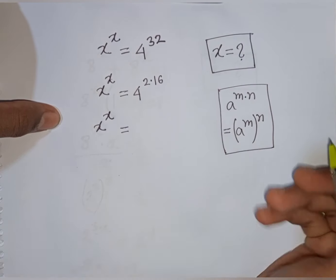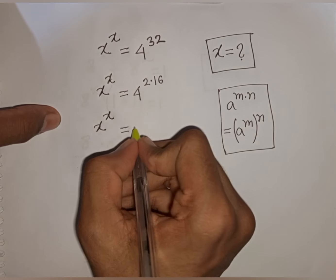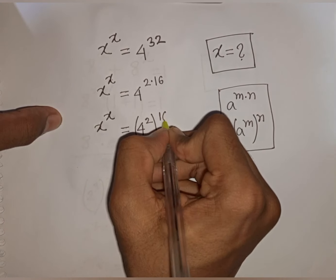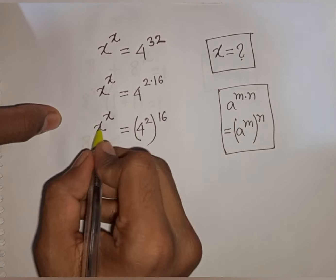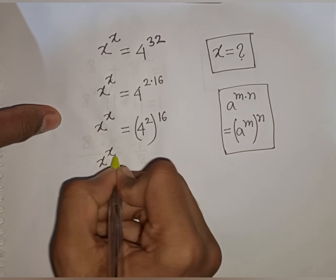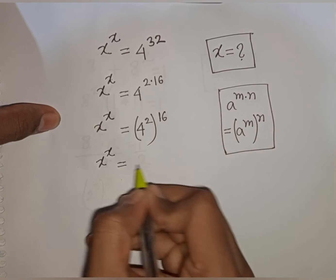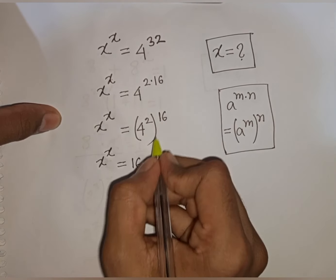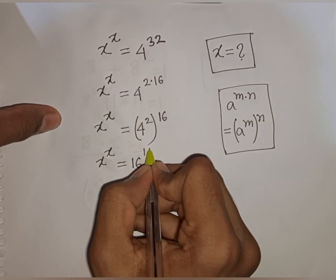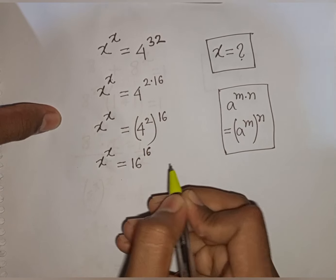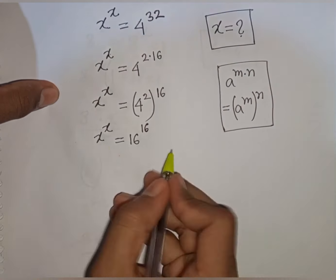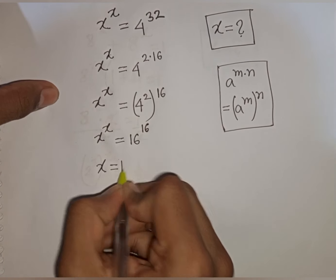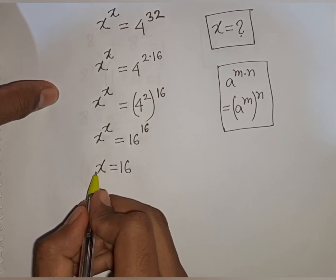According to this rule, we write 4 power 2, bracket power 16. Now 4 power 2 equals 16, so this becomes 16 power 16. Comparing x^x with 16^16, x is equal to 16. This is our final answer.